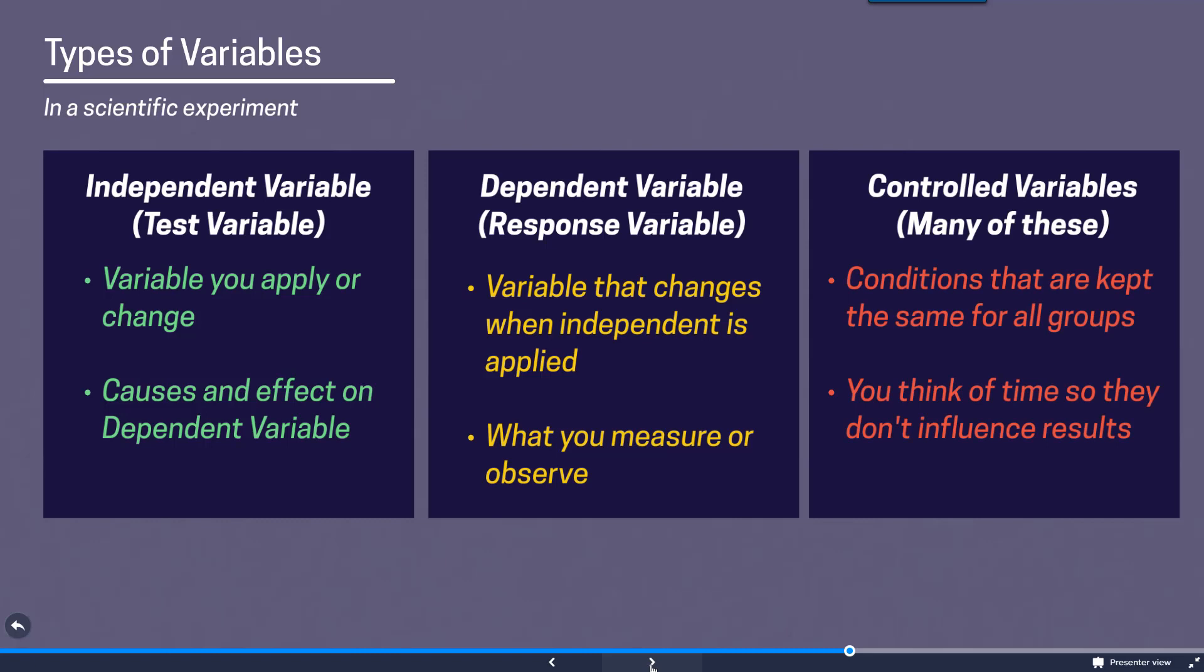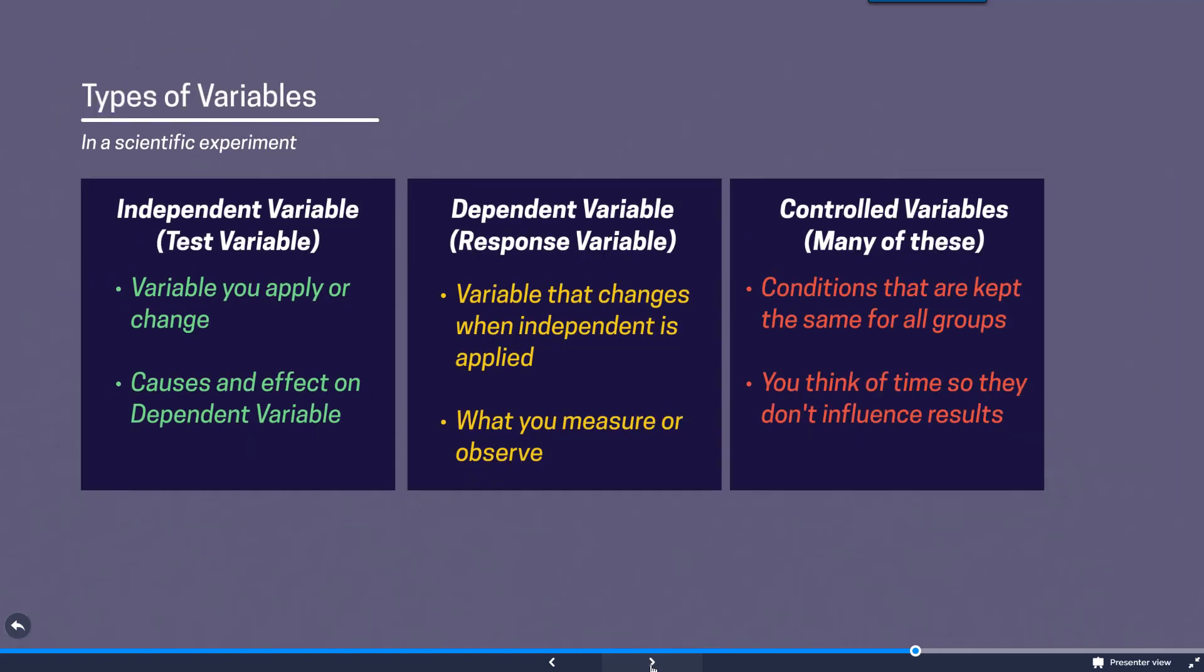Finally we have something called controlled variables. And there are going to be many of these. And we try and control as many external variables or unimportant variables to our experiment as possible. Essentially these are going to be conditions that are kept the same for all groups. And a scientist or a group of scientists have to think quite hard about this ahead of time. So they don't accidentally include factors or variables that are influencing the results. Or try to minimize that as much as possible.